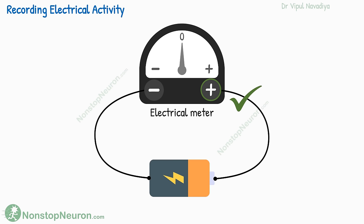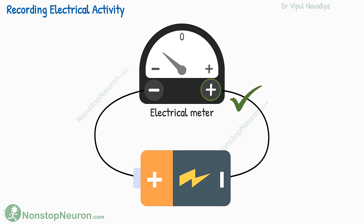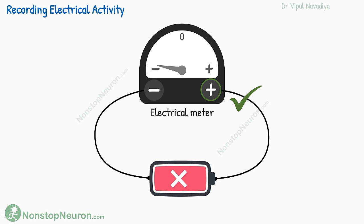Imagine a charged battery that has a positive potential on one end and a negative potential on the other end. Here we have connected the positive electrode to the positive side of the battery, so this electrode is at a positive potential with respect to the other one. If we flip the battery, now this electrode is at a negative potential, so the meter shows a negative reading. The more powerful the battery, the higher will be the reading. And if the battery is dead, meaning the potential difference is lost, the meter will not show any reading.